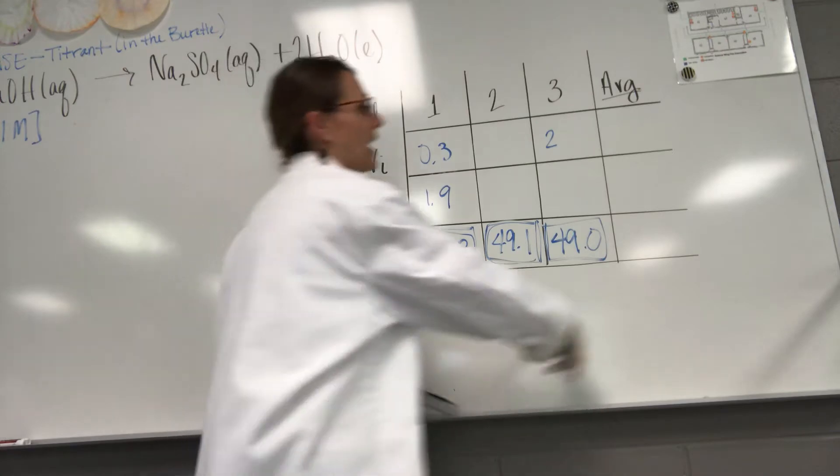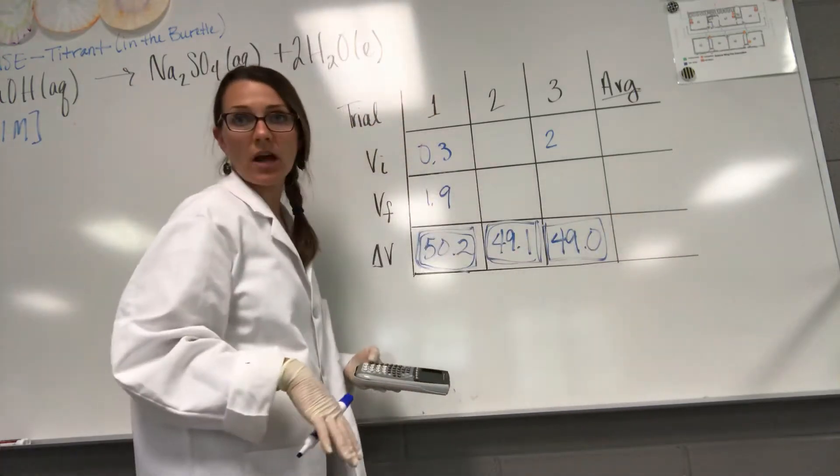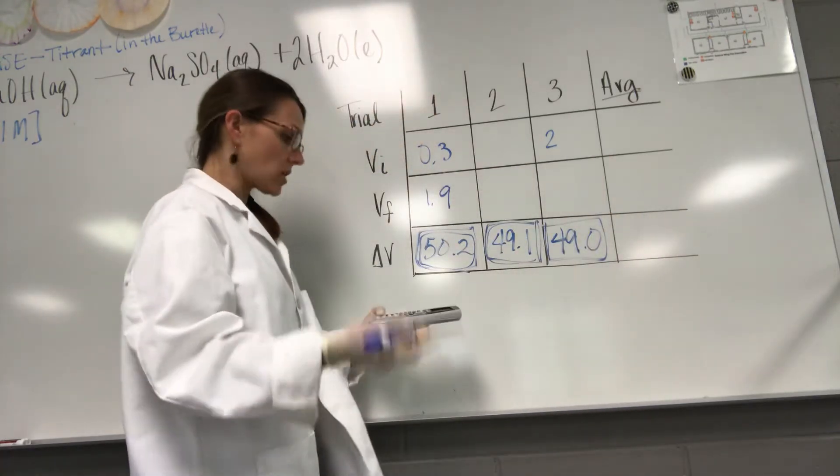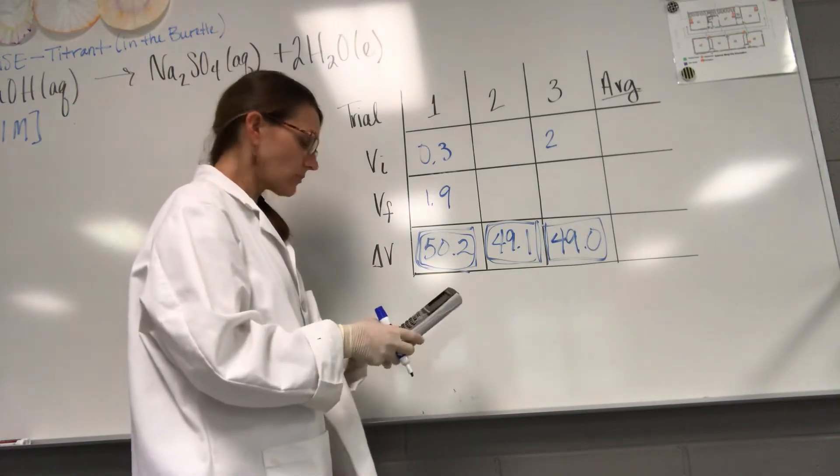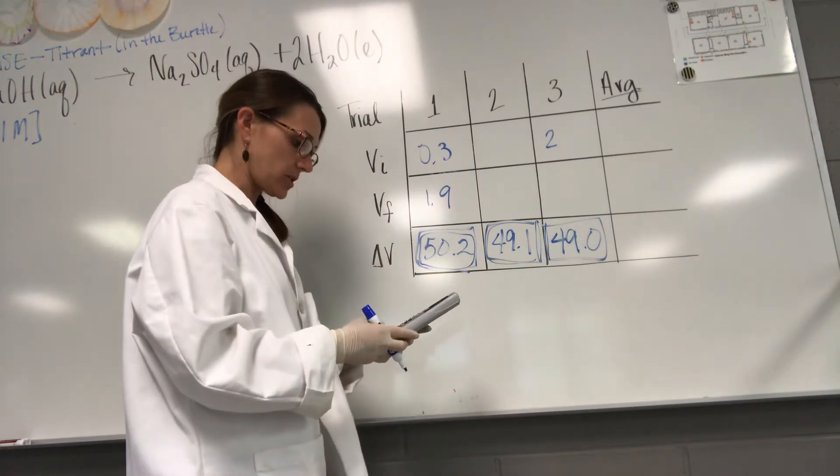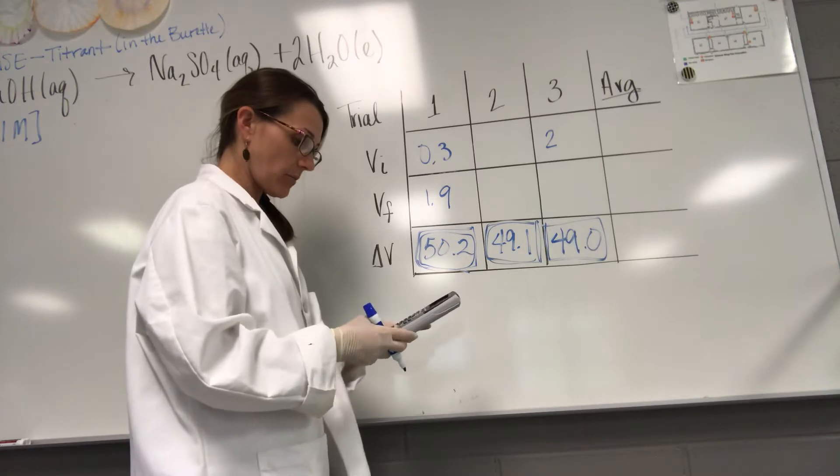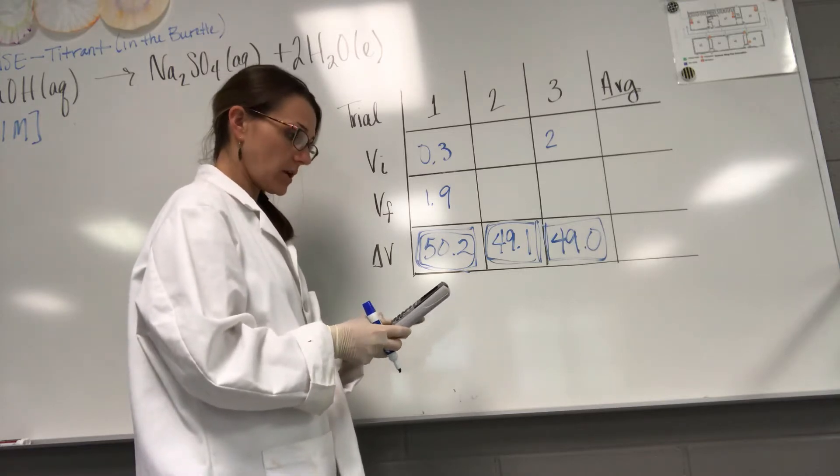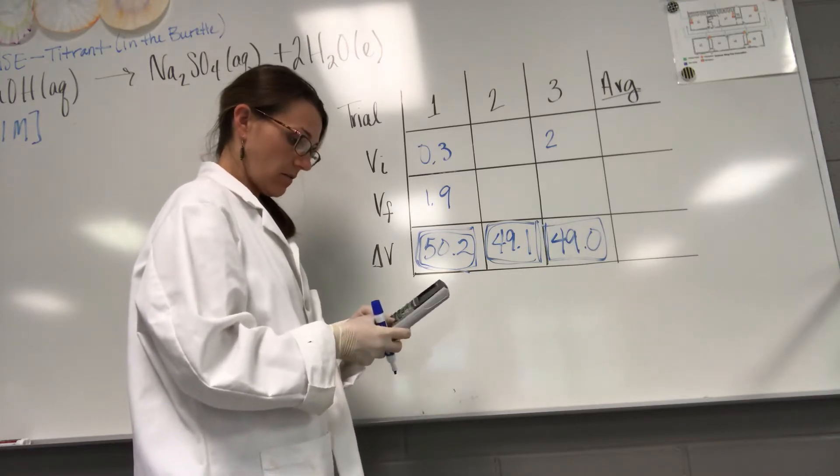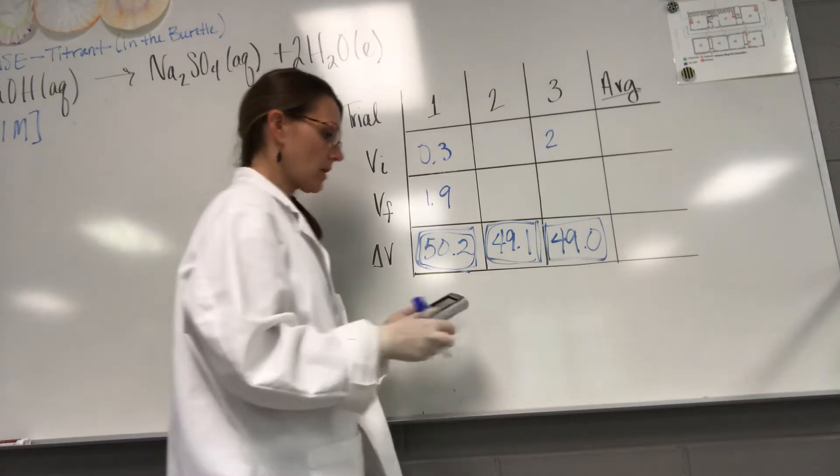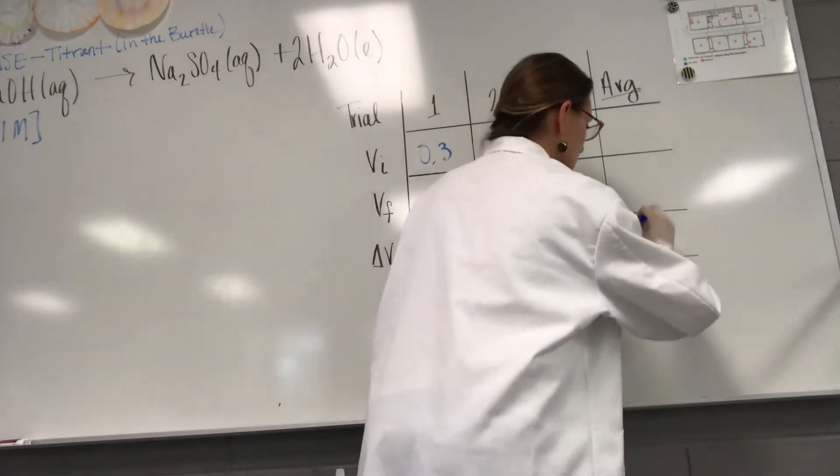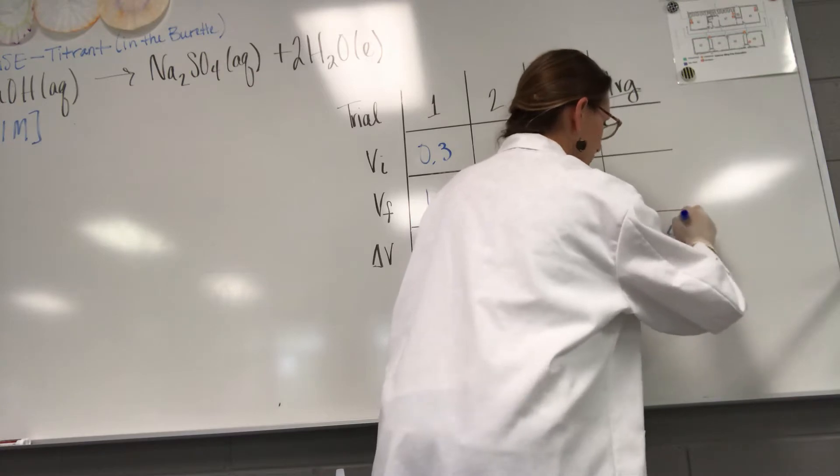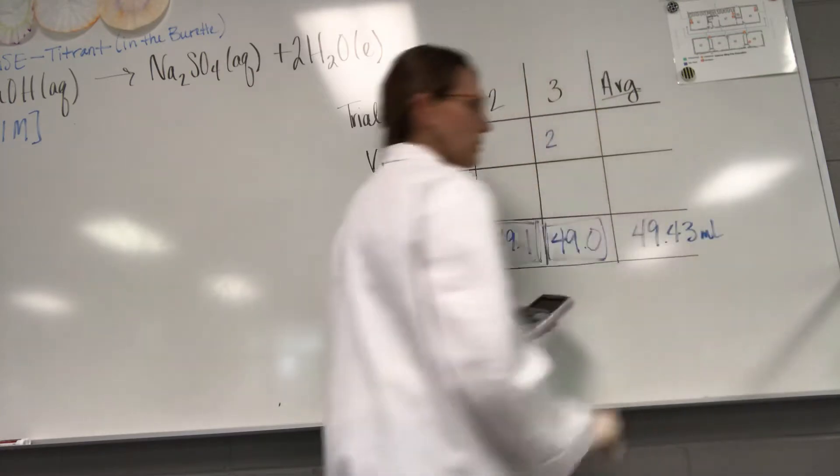So what I want to do before I do my titration calculation is I want to get an average for the three trials of how many milliliters on average it took to neutralize. So I'm just going to do 50.2 plus 49.1 plus 49 divided by 3, which is 49.43 mils.